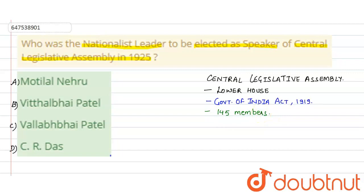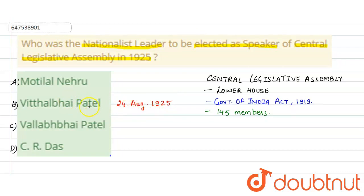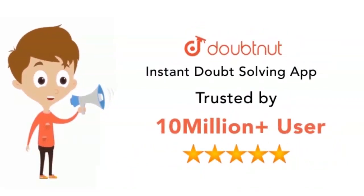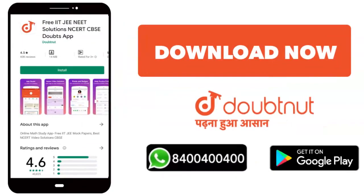Now, about this speaker — in 1925, a speaker was elected. Download Doubtnut for Class 10 to 12, IIT JEE Mains and Advanced level — 10 million students now. Download Doubtnut or WhatsApp your doubt to 8484 for all answers.